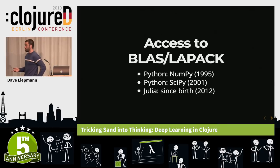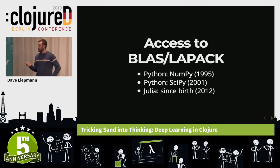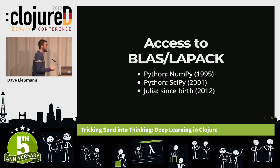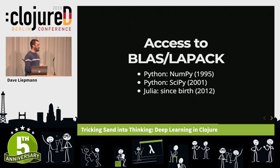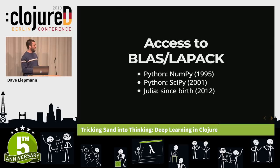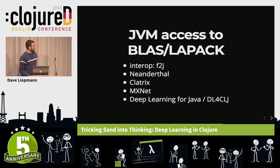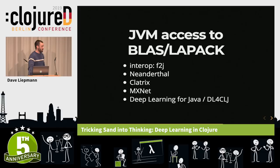Python has had access to BLAS and LAPACK for a long time — they got NumPy in 1995 and SciPy on top of that. Julia was purpose-built to talk to BLAS and LAPACK. For JVM access, there was F2J, which came out in 1999, but it required auto-translation into JVM bytecode and turned out to be three times slower. If you're talking about 450 GPUs for a week, three times slower is just not going to work.